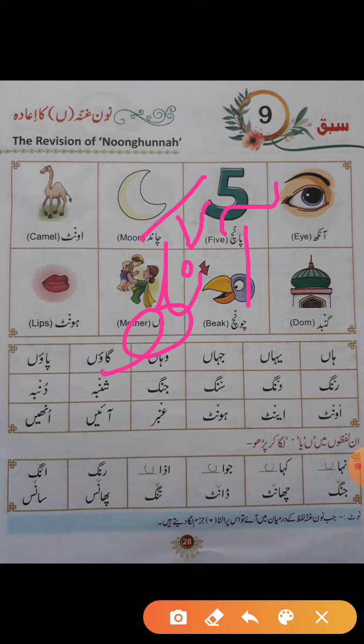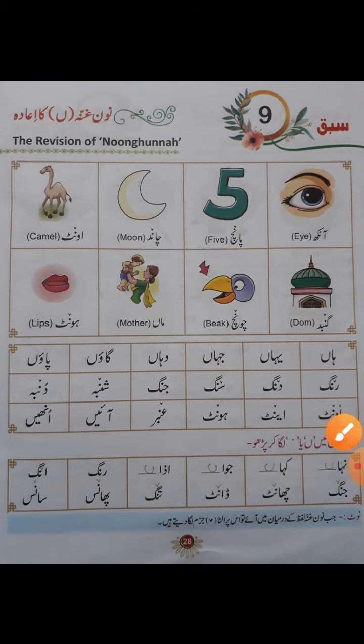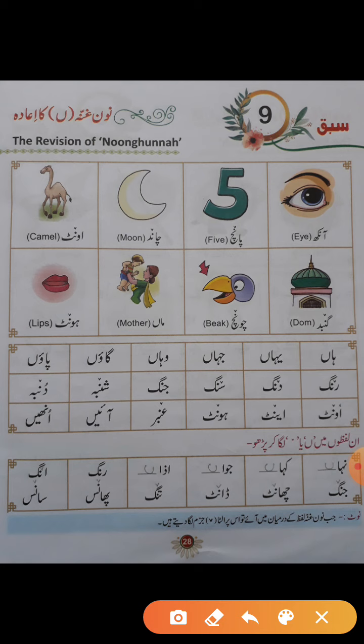آگے والے الفاظ پر: پانچ — یہاں پتہ چل رہا ہے کہ یہ آواز ناک میں نکلے گی، یہ نون غنہ ہے۔ ہم کیسے پہچانیں گے کہ یہ نون غنہ ہے یا پورا نون؟ جہاں نون غنہ آخر میں آئے جیسے چاند، اونٹ، گنبد، چونچ، ماں — تو وہاں نون غنہ پورا بنے گا لیکن نکتہ نہیں لگاتے۔ جیسے ہونٹ میں بیچ میں آیا تو پورا نون بنا کے اوپر ایرو لگا دیں گے۔